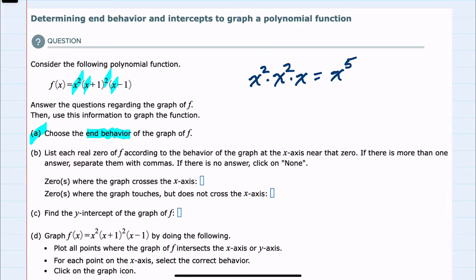And so to determine the end behavior, I can see that my leading coefficient is positive and that my degree is odd. So positive coefficient and odd means that the end behavior would be the same as a regular y equals x. So this is a simpler example of positive coefficient, odd degree, and I know that this has the general shape of going down to the left and up to the right.